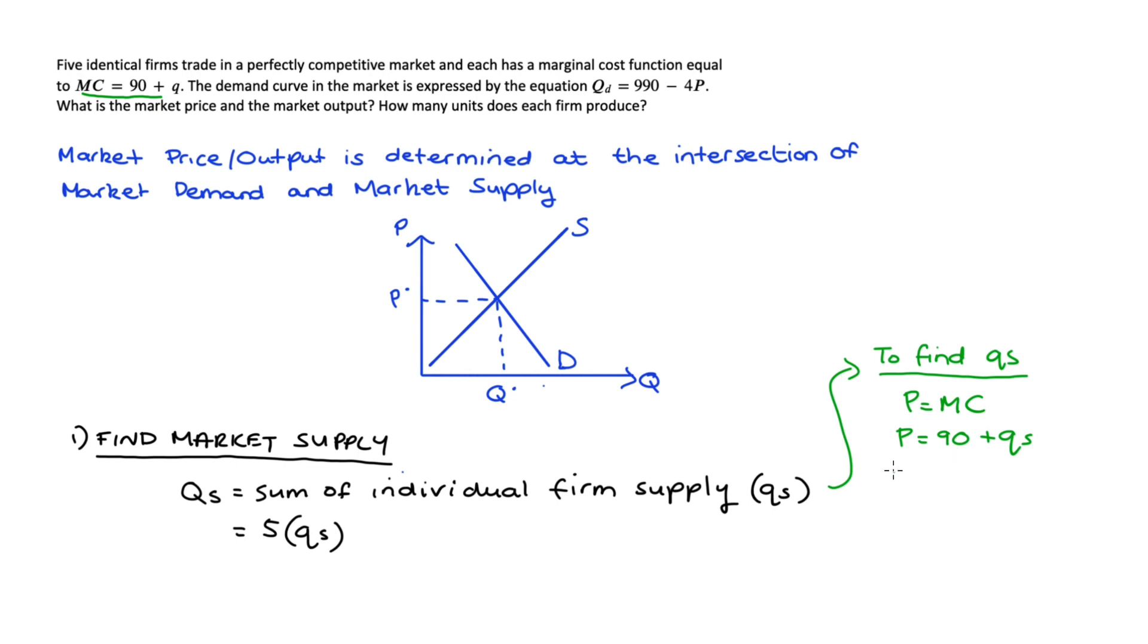I'll put a subscript s here because this is a supply function for the firm because it relates the price of the good to the quantity supplied by the firm. Now I'm going to just manipulate this equation until that quantity variable is isolated, so in this case the function is quite easy, all we need to do is take away 90 from both sides so I get the quantity supplied by the firm is equal to P - 90. Now substituting this expression into our market supply equation, I get the quantity supplied in the market is equal to five times price minus 90. Opening out that bracket we get quantity supplied is equal to 5P - 450 and that will be our market supply curve. This equation relates the price to the quantity supplied in the market.